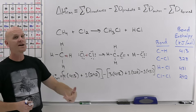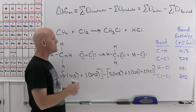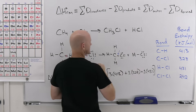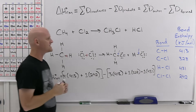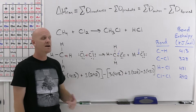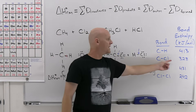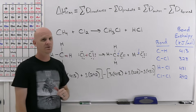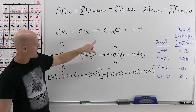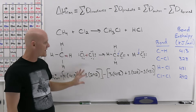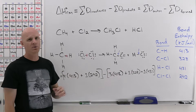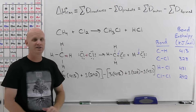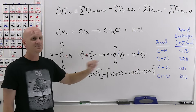One of the biggest mistakes students make is subtracting and then also changing the sign of the bond enthalpy values to negative — don't do that. The formula says reactants minus products, and the subtraction is already changing the sign for you. For example, forming a C–Cl bond releases 328 kJ/mol; breaking it costs 328 kJ/mol. You're not supposed to change the sign yourself — the subtraction accomplishes that.